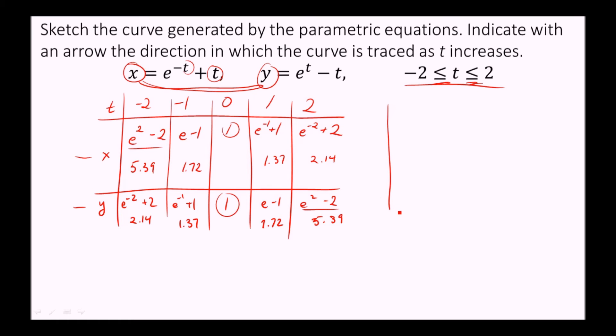So what we want to do now is graph these points in an x, y coordinate plane. Okay. So our first value, when t is negative two, we have x is 5.39, and y is 2.14. So about here. So we did that one.